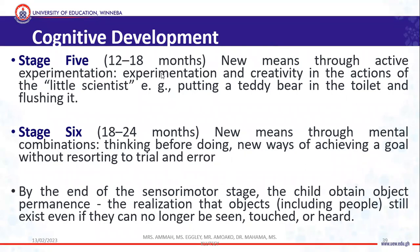Between twelve to about eighteen months, the child develops new means through active experimentation — what Piaget termed 'little scientists.' The child gradually learns about the world by exploring things themselves: putting a teddy bear in the toilet to see what happens, emptying a box of noodles into a bathtub, pouring things on the floor, or applying their mother's makeup on their face. Piaget says this experimentation and creativity helps the child learn more about the world.